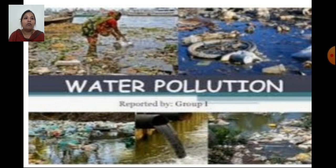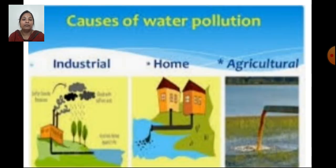This picture shows water pollution — how water gets polluted by throwing garbage, and by waste from factories, houses, and sewage being let into water bodies. The causes of water pollution include industrial water pollution, where waste from factories and industries is discharged into streams and water bodies.